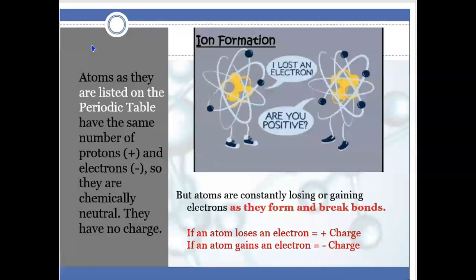Atoms are constantly losing or gaining electrons as they form and break bonds. Since we're talking about ionic formation or ion bonds, what you need to understand is if an atom loses an electron to be happy with their 8 to get below that one valence electron, that's going to result in a positive charge. If an atom gains an electron to meet 8, then it's going to have a negative charge.